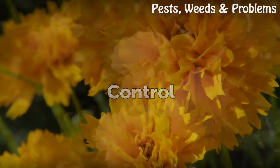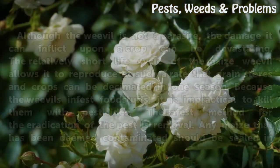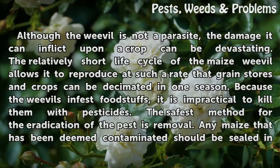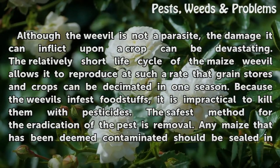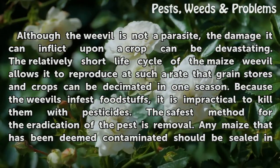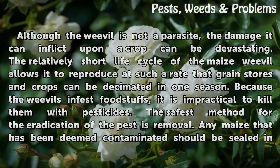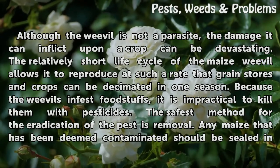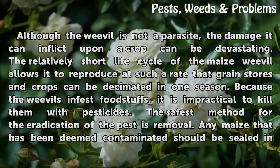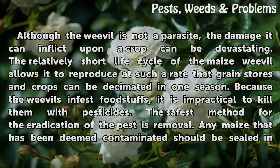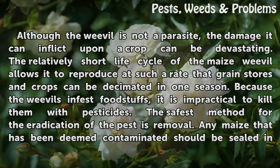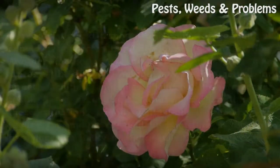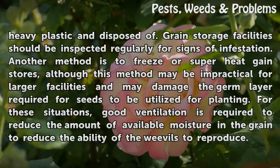Control. Although the weevil is not a parasite, the damage it can inflict upon a crop can be devastating. The relatively short life cycle of the maize weevil allows it to reproduce at such a rate that grain stores and crops can be decimated in one season. Because the weevils infest foodstuffs, it is impractical to kill them with pesticides. The safest method for eradication of the pest is removal. Any maize that has been deemed contaminated should be sealed in heavy plastic and disposed of.